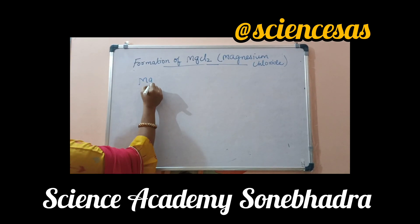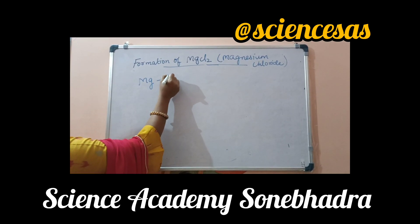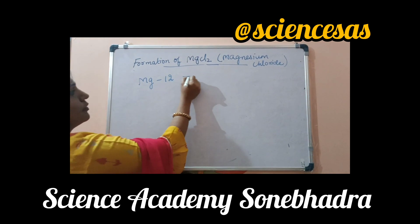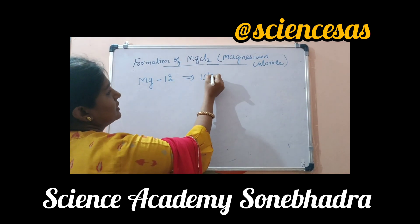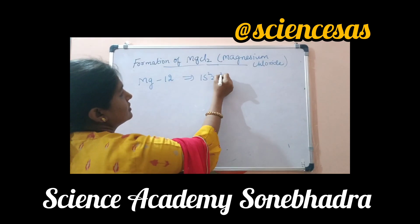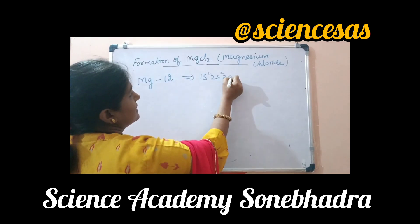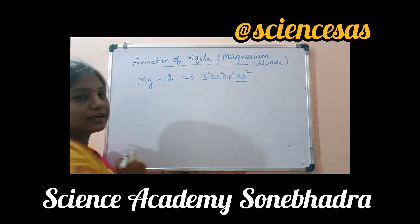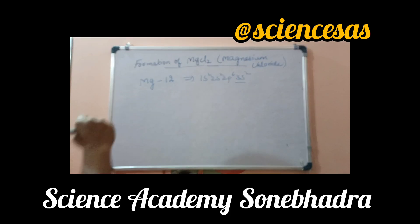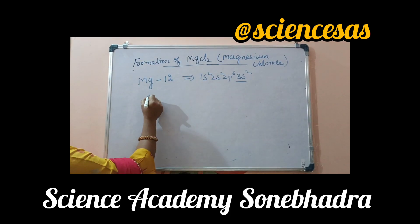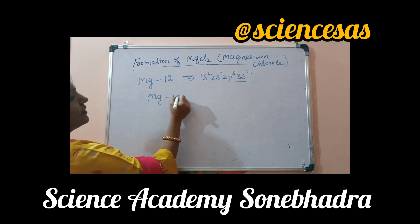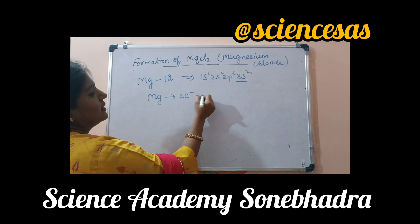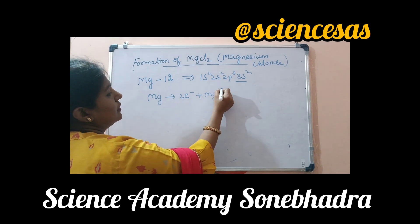Magnesium has atomic number 12. Its electronic configuration is 1s2, 2s2, 2p6, 3s2. It has two extra electrons in its outermost shell, so it gives away those two electrons and becomes Mg²⁺.